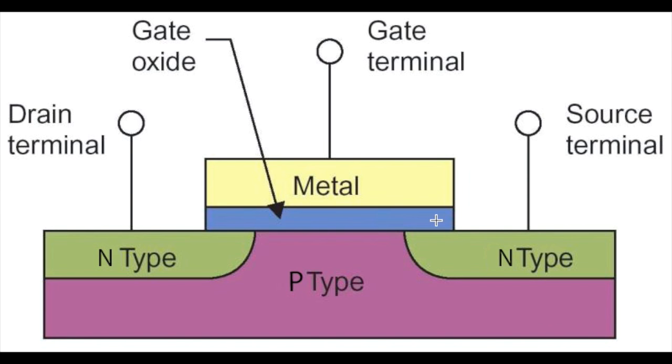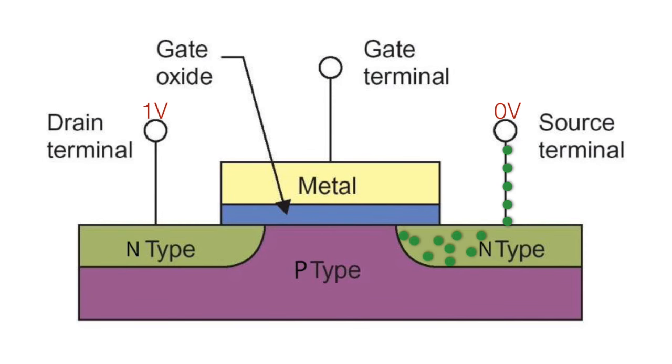The gate contact is made of a highly conducting material separated from the semiconductor by an insulator. By applying a suitable potential difference on the gate terminal, charge can be attracted from the source. As a result, the barriers that prevent the flow of electrons are lower, allowing electrons to flow from the source to the drain.